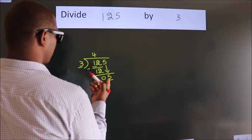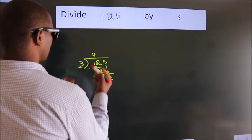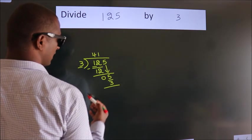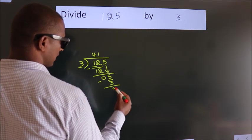A number close to 5 in 3 table is 3 1s 3. Now we subtract, we get 2.